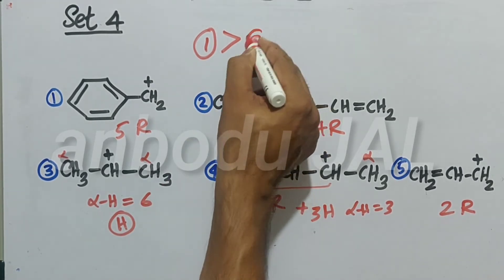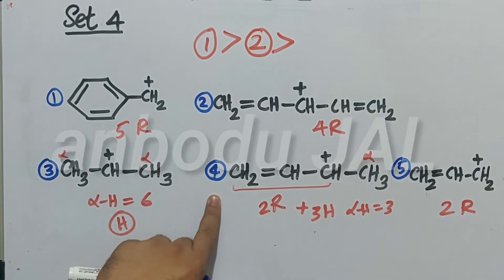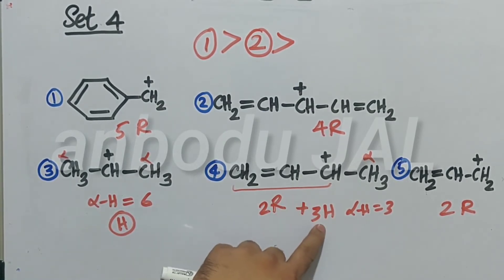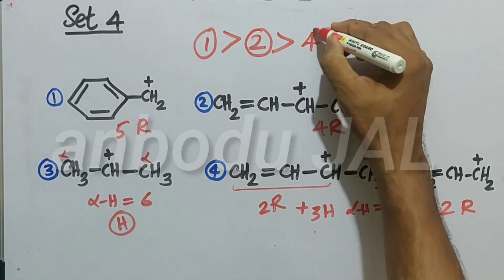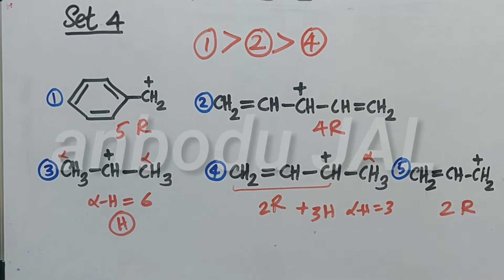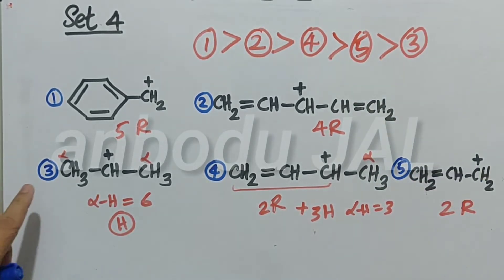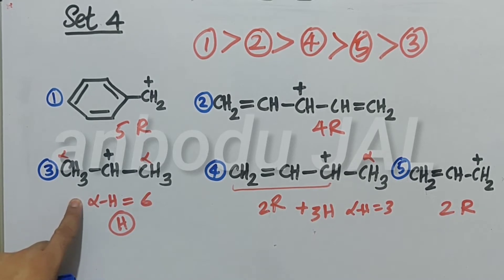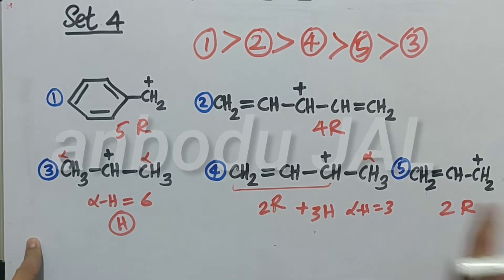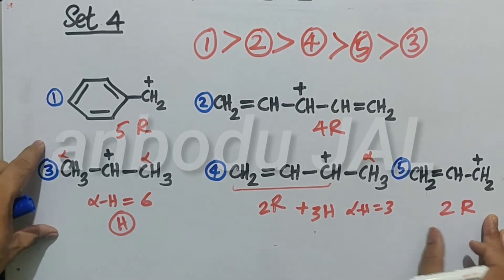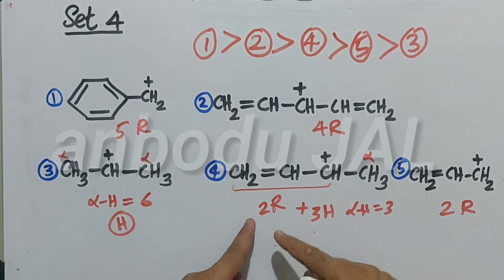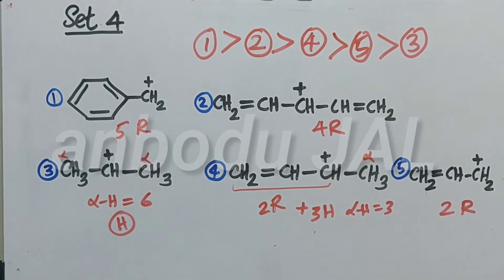Then structure number two, then structure number four. Structure four has two resonance structures and three hyperconjugation, giving it more stability than structure five, which has more stability than structure three. In structure three, only hyperconjugation. In structure five, only resonance. Resonance structures are more powerful than hyperconjugation. In structure four, both resonance and hyperconjugation are present. Structures one and two have the most resonance structures — that is why we get this order of stability.